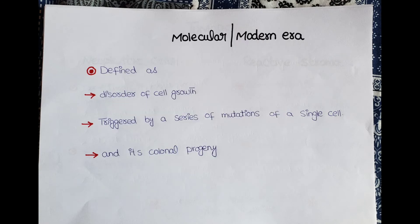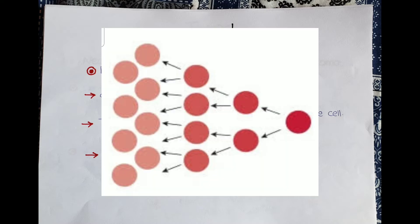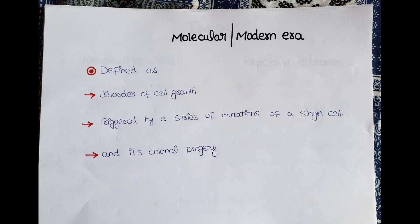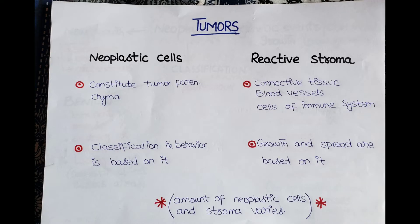This definition was given in the pre-molecular era. After knowledge of molecular genetics, neoplasia can now be defined as a disorder of cell growth triggered by a series of mutations of a single cell and its clonal progeny. This is a simpler but authentic definition of neoplasia in the modern era.